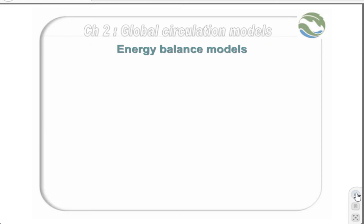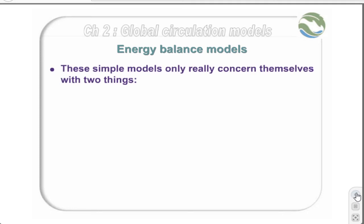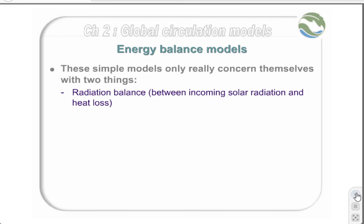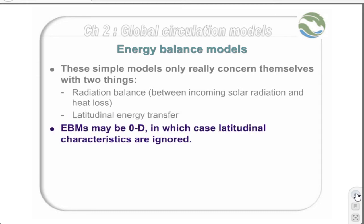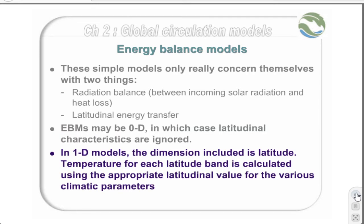Energy balance models are very simple models that concern themselves with two things: radiation balance — that's between incoming solar radiation and heat loss — and the latitudinal transfer of energy. Energy balance models may be zero-dimensional, in which case latitudinal characteristics are ignored, or one-dimensional, in which case the dimension included is latitude. Temperature for each latitude band is calculated using the appropriate latitudinal value for various climatic parameters.